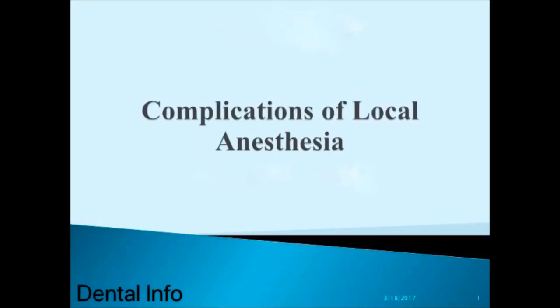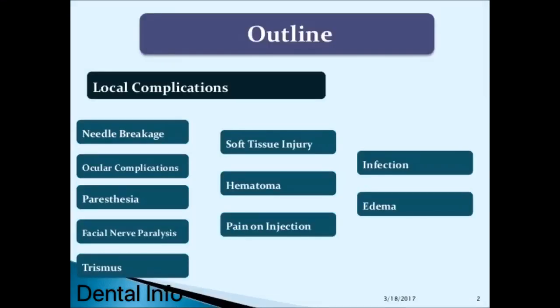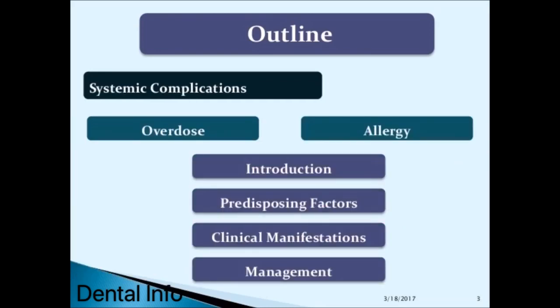Complications of local anesthesia include local complications such as needle breakage, ocular complications, paresthesia, facial nerve paralysis, trismus, soft tissue injury, hematoma, pain on injection, infection, and edema. Systemic complications include overdose and allergy.